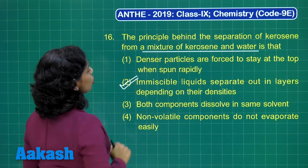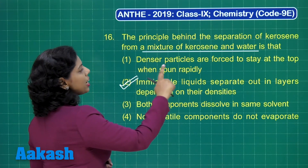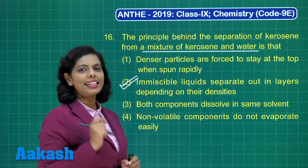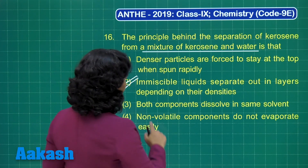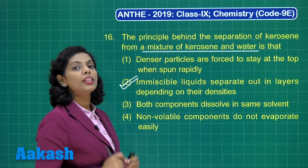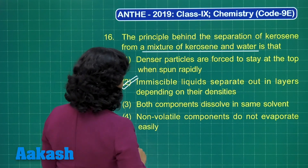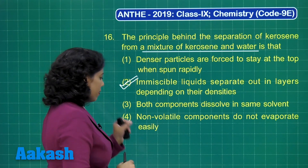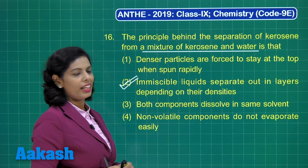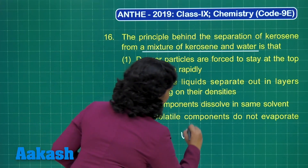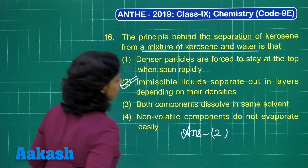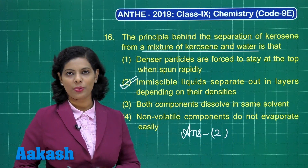Option 1 states: denser particles are forced to stay at the top when spun rapidly — this is the principle of centrifugation. Option 3, both components dissolve in the same solvent, is the principle of chromatography. Option 4, non-volatile components do not evaporate easily, is the principle of evaporation. So the correct answer is option 2.